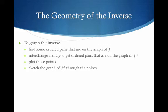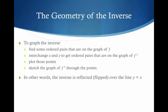The x-intercept for f becomes the y-intercept for f inverse, and vice versa. In other words, the inverse is reflected or flipped over the line y equals x — the diagonal, or the identity function as I've called it.